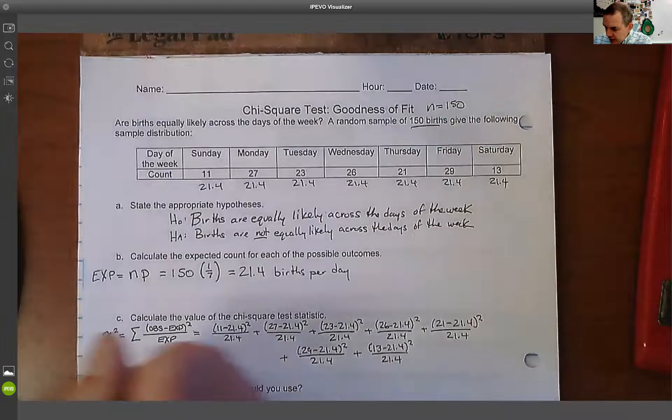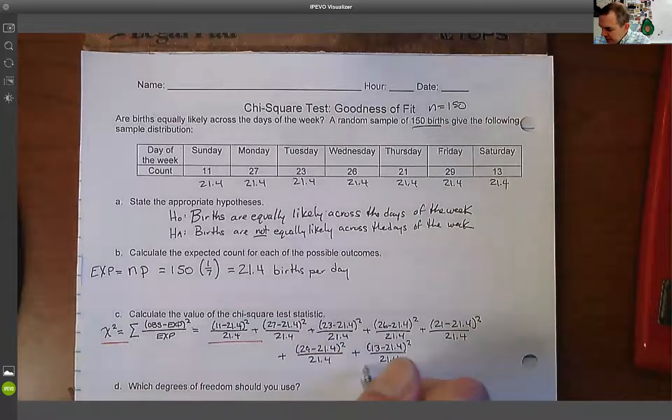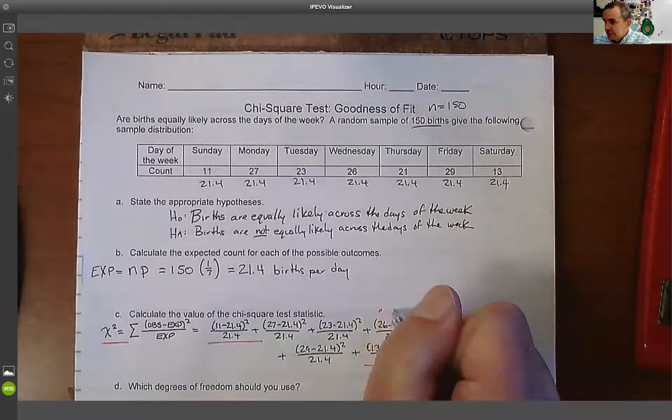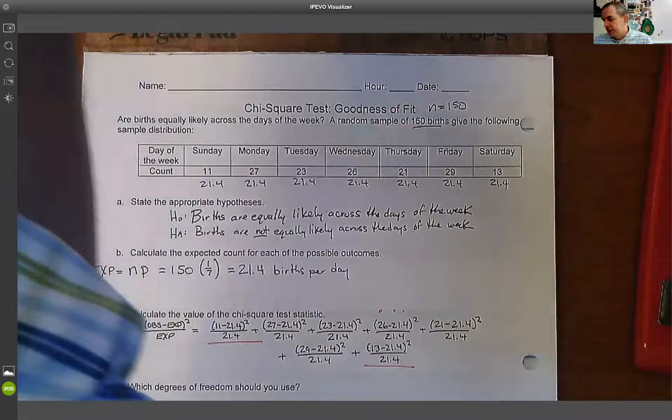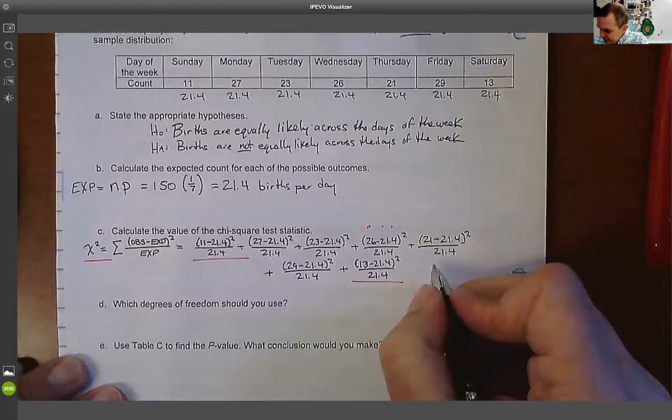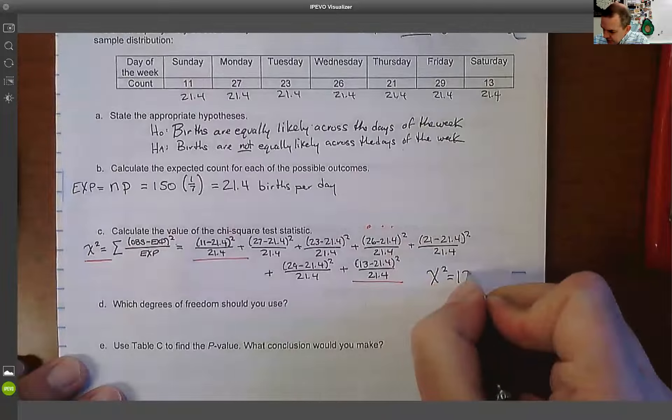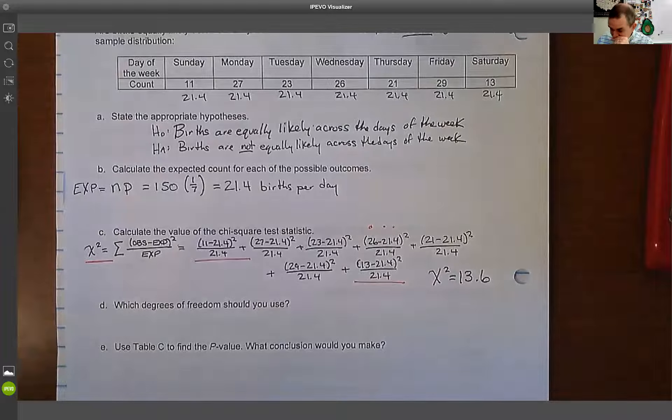So let me actually just stop right here and say that when you write this, you're not going to write them all out. You're going to give me the chi squared equals, you're going to give me the first term plus, you're going to give me the last term, and then you're going to put that ellipse in the middle. That's what you're going to do. You show me the first, you show me the last, and then you give me the answer. So in this case, what we're going to find out is that chi squared is going to equal 13.6. If I type that whole thing into the calculator, I'm going to get a chi squared of about 13.6.